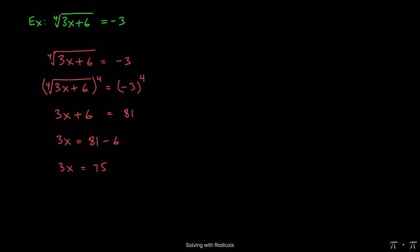And finally, in order to isolate the x or solve for x, we can simply divide both sides by 3 to get x equals 75 over 3, which equals 25.